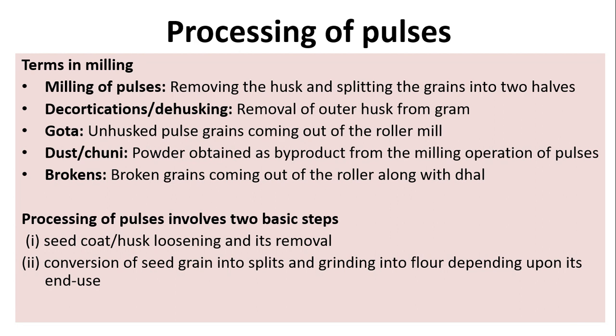Processing of pulses — terms in milling: milling of pulses means removing the husk and splitting the grains into two halves. In the case of cereals, milling means only removing the husk, but for pulses it means removing the husk plus splitting the grains into two halves. Decortication or dehusking refers to the removal of the outer husk from gram.